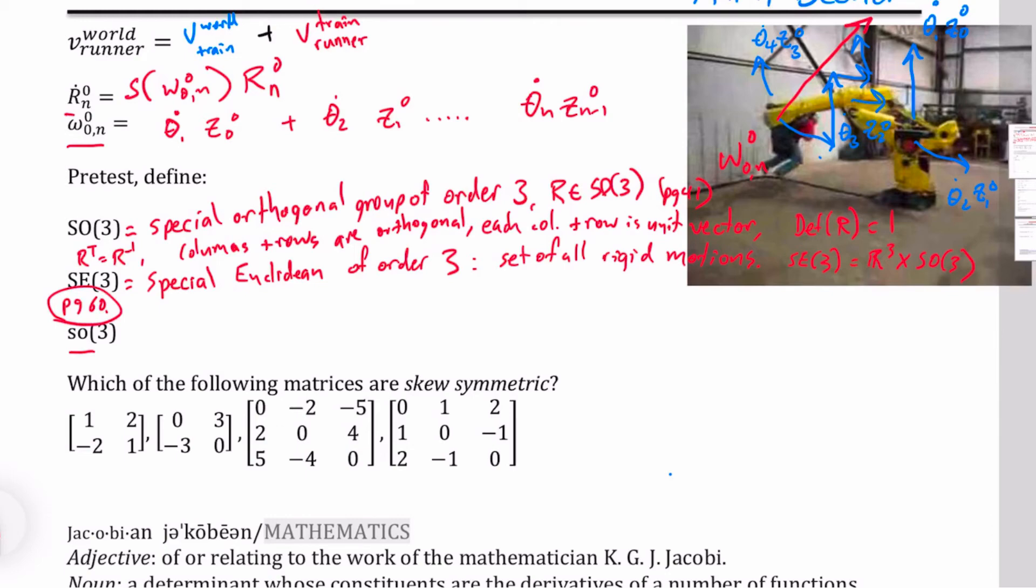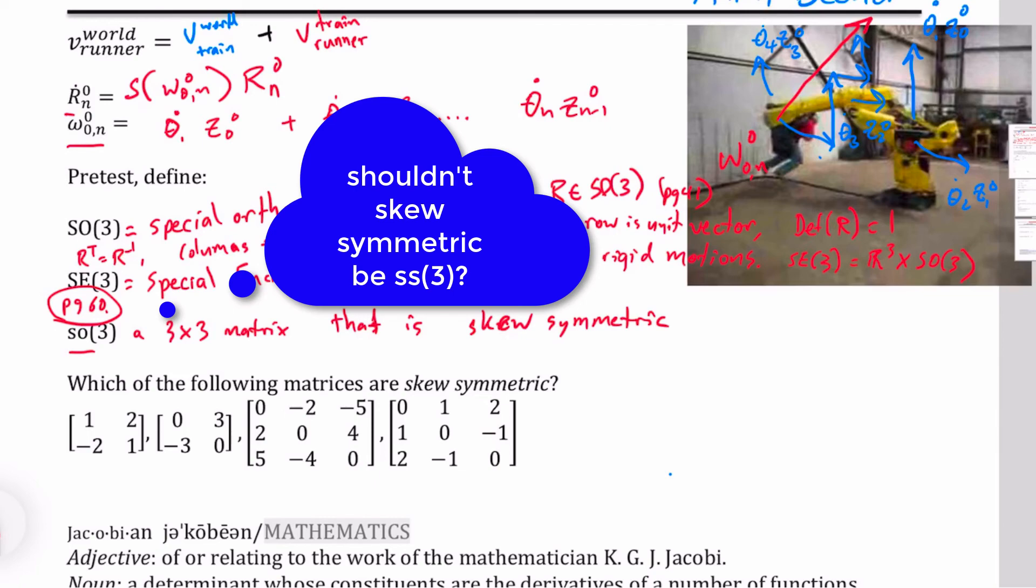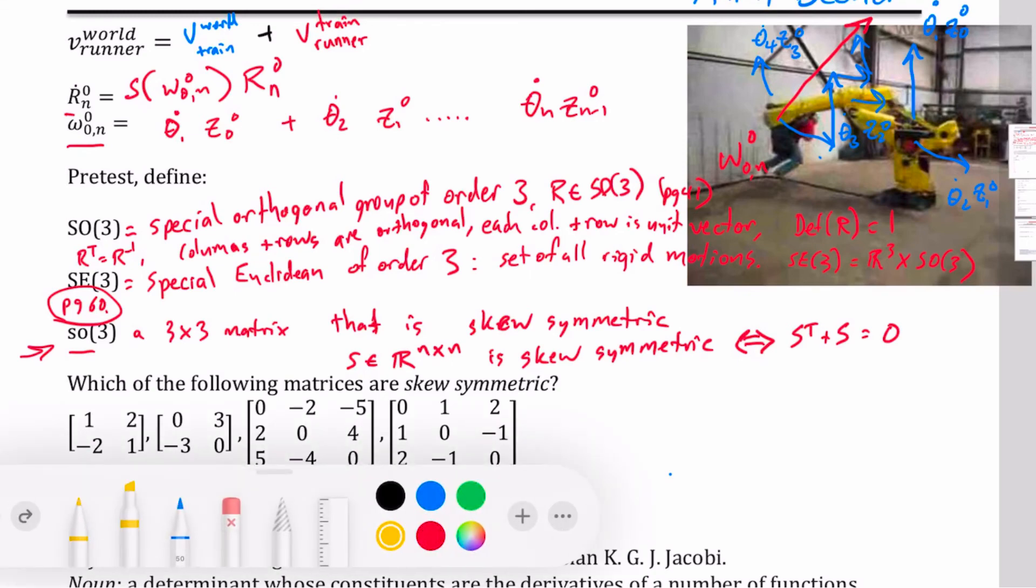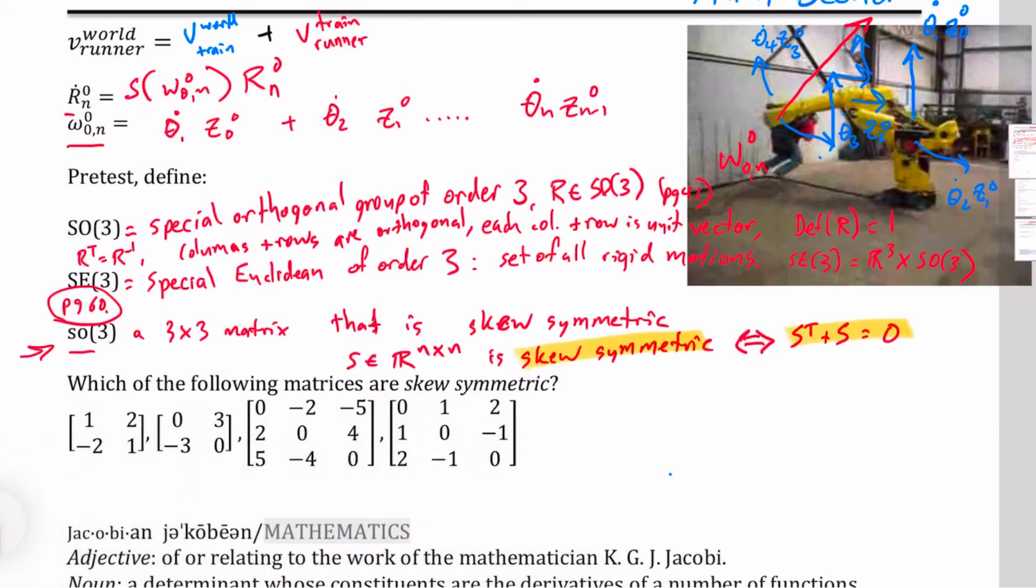Now, the new one is so(3). And these are a 3 by 3 matrix that is skew-symmetric. And you might say, well, how do you get skew-symmetric? Shouldn't that be lowercase ss? And I think so, but you can blame the mathematicians for this notation. We say that a matrix S is skew-symmetric if, first of all, S has to be a square matrix. So it can be an n by n. In this case, this is so(3). So that is a 3 by 3 matrix is skew-symmetric if and only if the transpose of S plus S is equal to zero. So that is what skew-symmetry means. You are skew-symmetric if and only if, if I take it and add it to its transpose, I get zero.